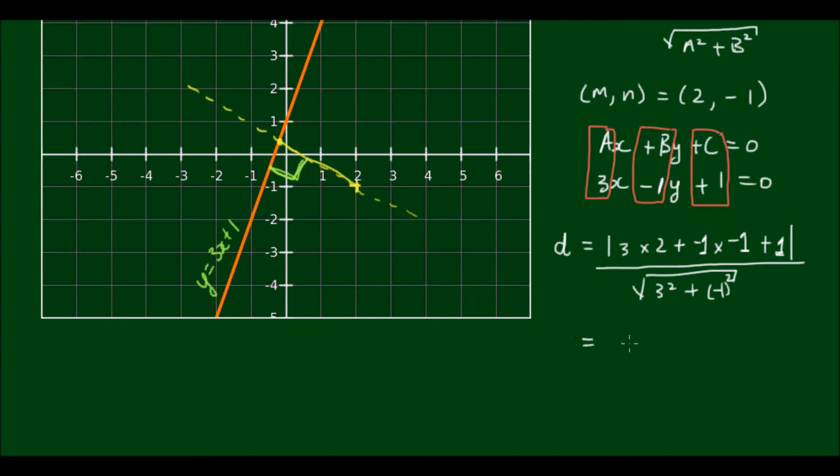So solving this equation we have 6 plus 1 plus 1 divided by square root of 10. So 3 squared is 9 plus 1 squared is 1. And the absolute value of positive 8 is simply 8. So our answer is 8 divided by the square root of 10.